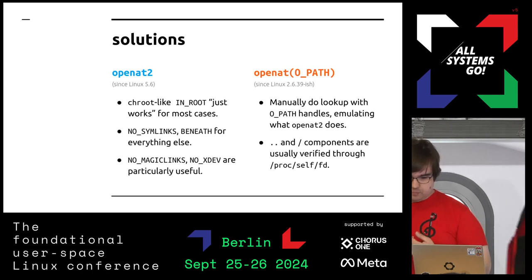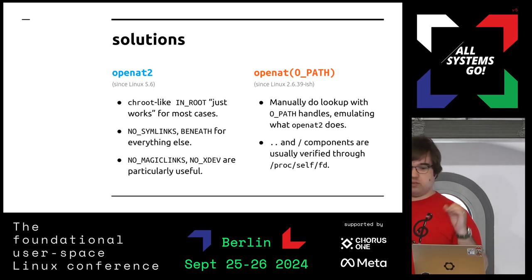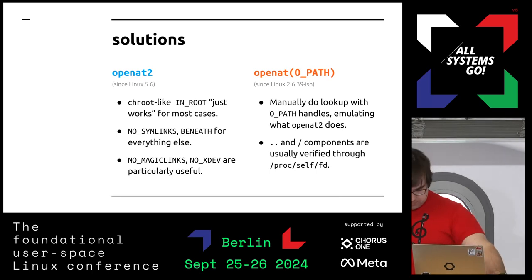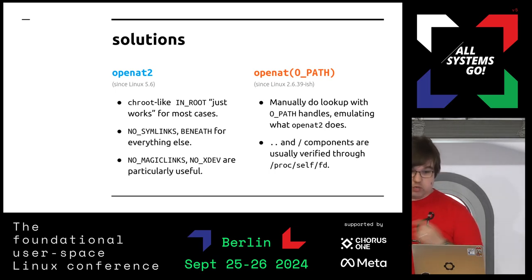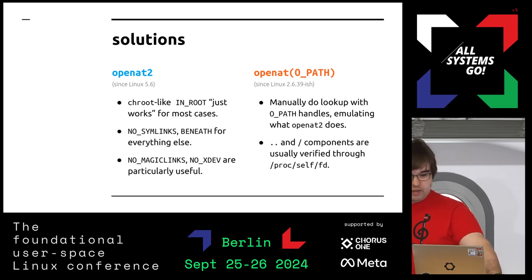The newer way, which I worked on a few years ago, is openat2, an in-kernel way to do that. When you're doing a lookup you can add resolution flags to restrict what the resolution does. You can say: I want this open operation to resolve the path as if it was in a chroot from this directory. Or you can resolve it without any symlinks at all. Resolve_beneath is similar to in-root but gives you an error if you try to walk outside it. You can also block magic links — proc/self/fd style symlinks that aren't real symlinks — and block any mount point crossings including bind mounts with no_xdev. The last two were not actually possible to block from user space in a race-free way before openat2.